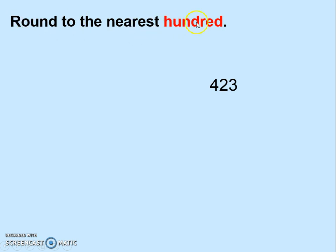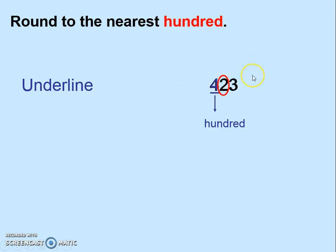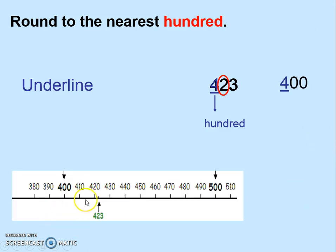Now let's try some examples of rounding to the nearest 100. Nearest hundreds are multiples of 100, like 100, 200, 300, 400, and so on. This time we underline the digit in the hundreds place. Again, circle the number to the right. 2 is a small number, so the 4 will stay the same, and we replace the numbers to the right with zeros. The answer is 400. If you look at the number line, 423 is between the multiples 400 and 500 — clearly it's closer to 400.